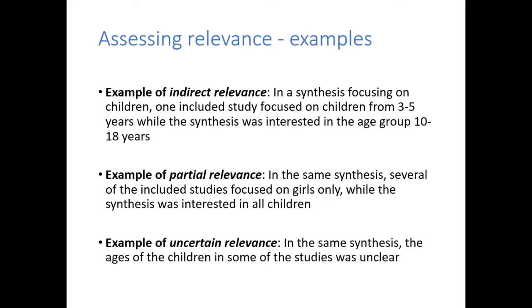Partial relevance may also arise — for example, when you're looking at a synthesis on children and you only have studies that look at girls rather than both girls and boys. It's difficult to judge the relevance of data from girls only to the population specified in the review question. In some instances, the relevance may be uncertain — for example, if the ages of the children in some studies are unclear, or if the settings are unclear.